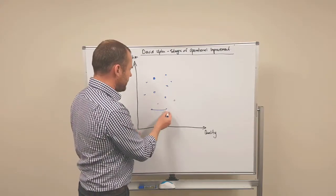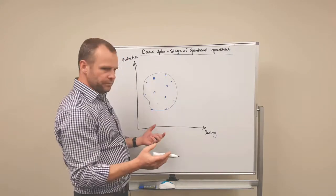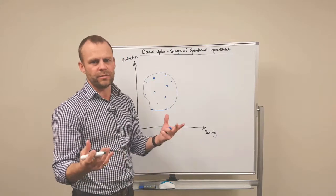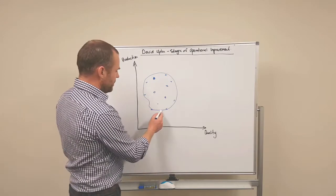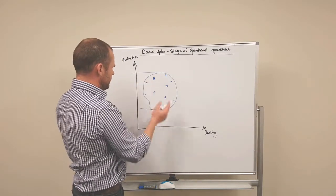If you draw a line around that you can call that an operating envelope. And the problem is for most operations that this makes it really difficult for the planners to estimate how much they're going to get out any particular day.